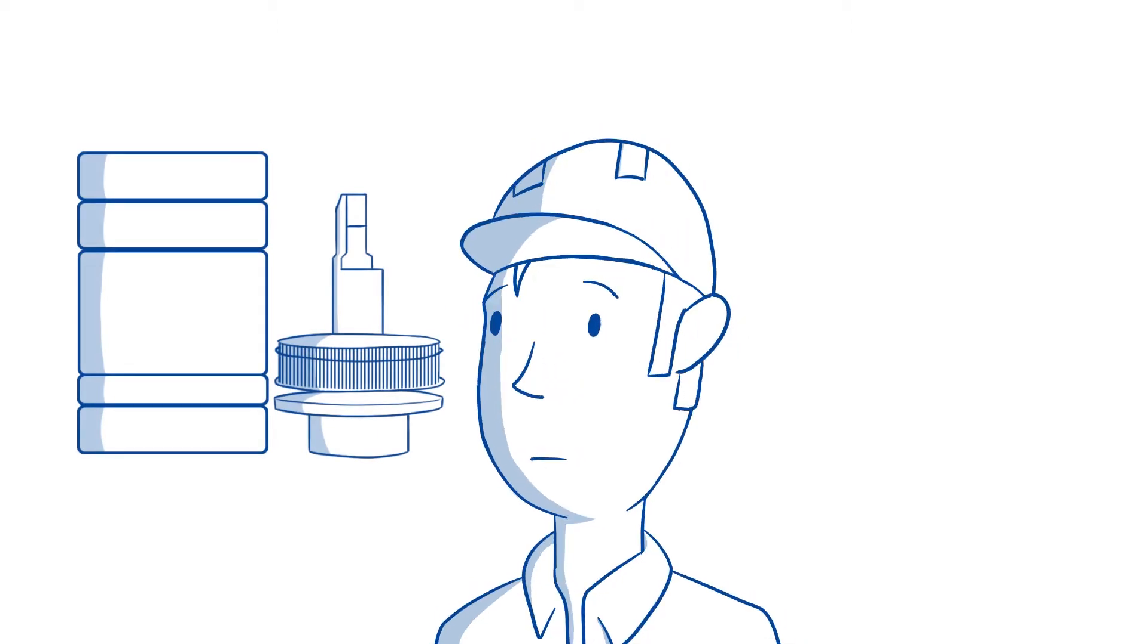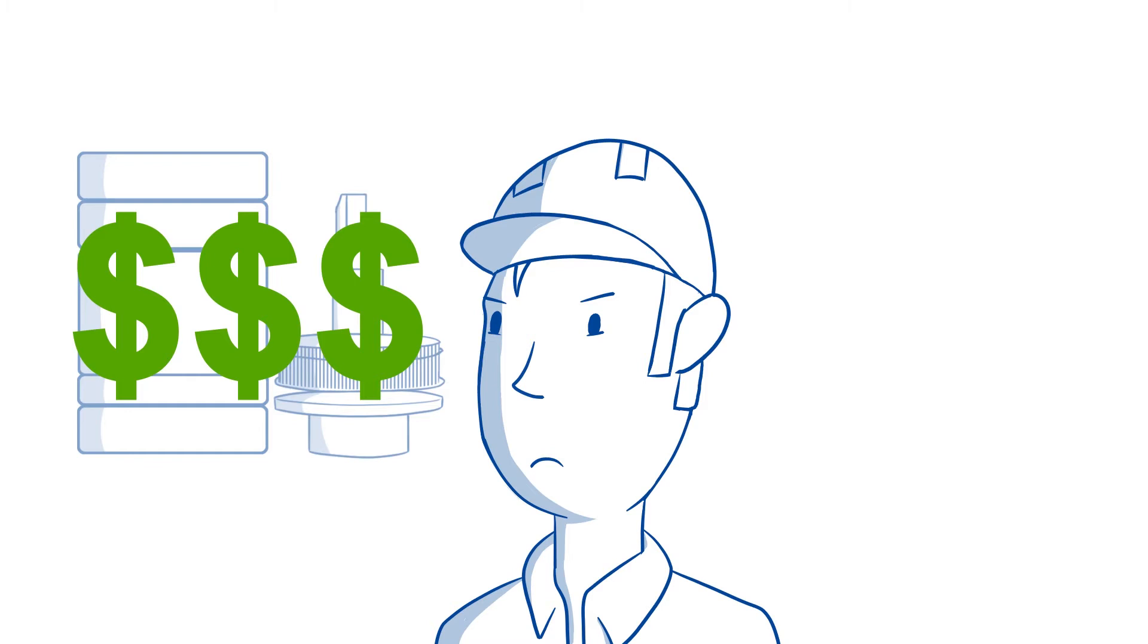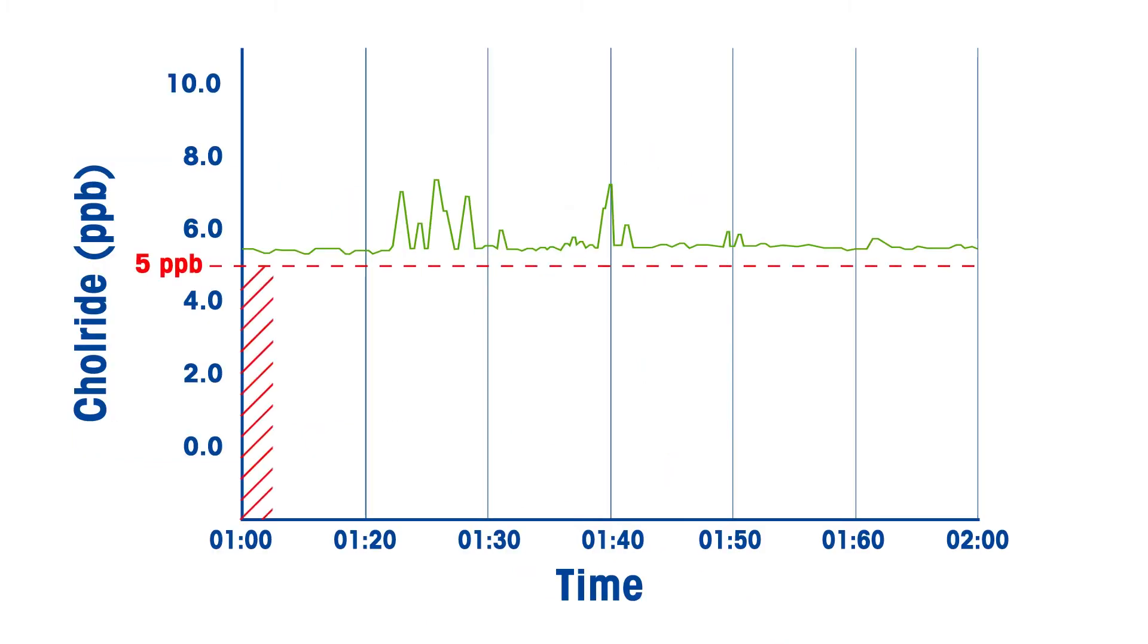Current methods of ppb-level detection, such as ion chromatography, are either too expensive to acquire and operate, or do not have low enough levels of detection.